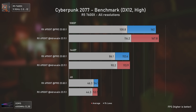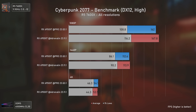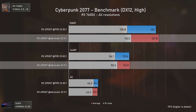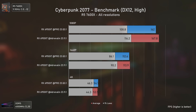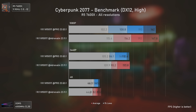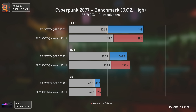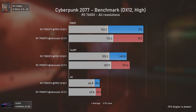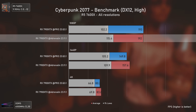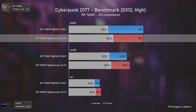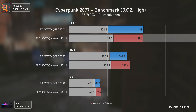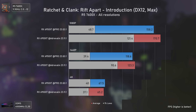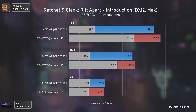Moving to Cyberpunk 2077, we finally have more predictable results — the Adrenaline drivers are slightly faster, especially in the 1% lows at 1080p and 1440p, while being slightly lower at 4K somehow. With the RX 7900 XTX we have more stable results, with the Adrenaline drivers considerably superior — delivering 13% more 1% lows at 1080p and overall higher FPS at 1440p and 4K as well.